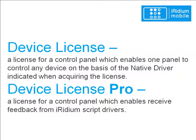There are several types of Iridium licenses. The first and main is the device license — a license for a control panel which enables one panel to control any device on the basis of the native driver indicated when acquiring the license. Device license is selected for one of Iridium's native drivers and enables communication with it in a two-way mode: to send commands and receive feedback.